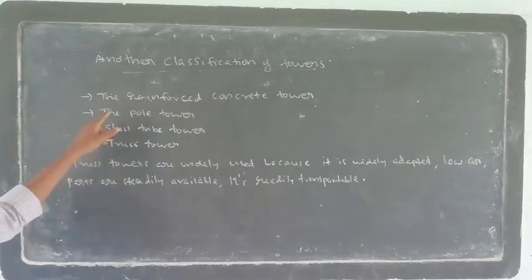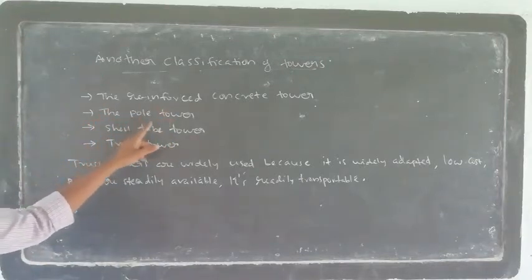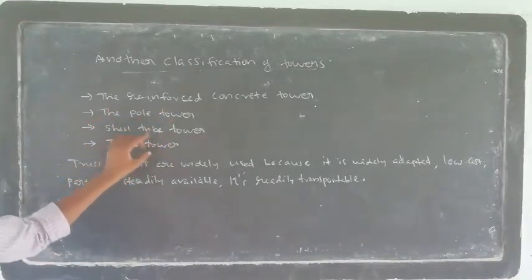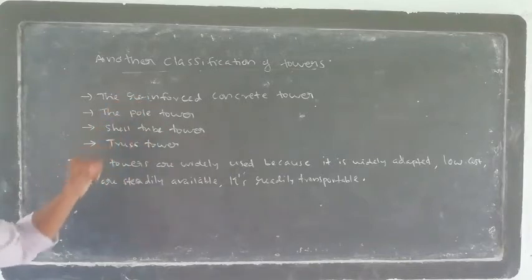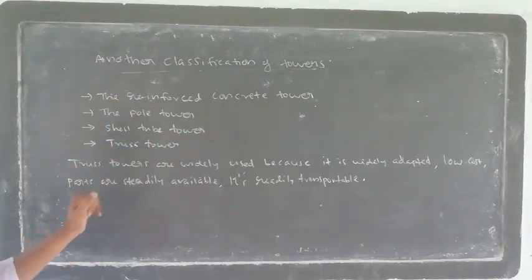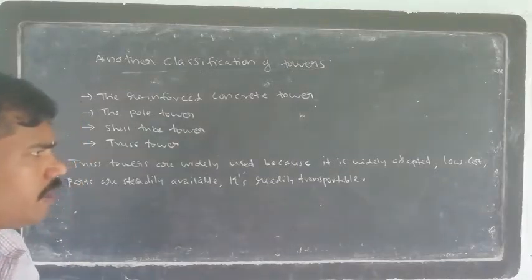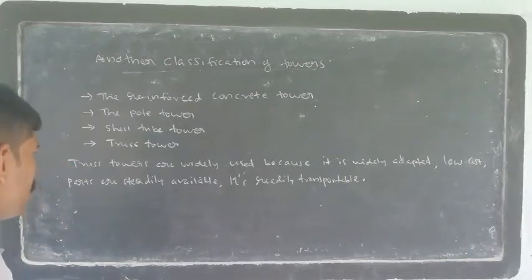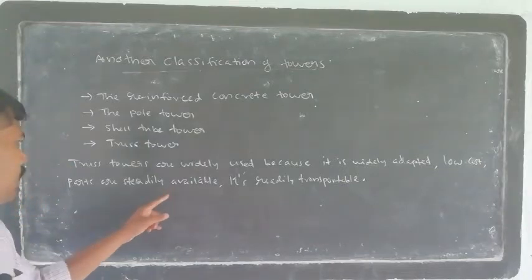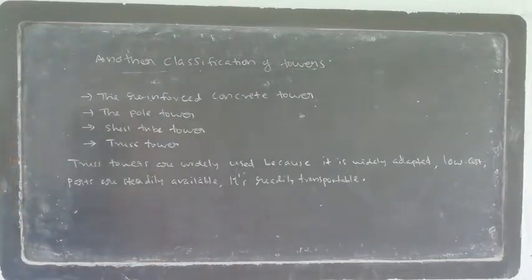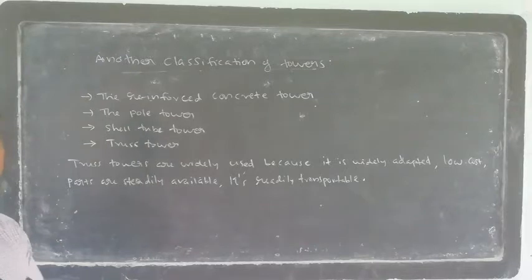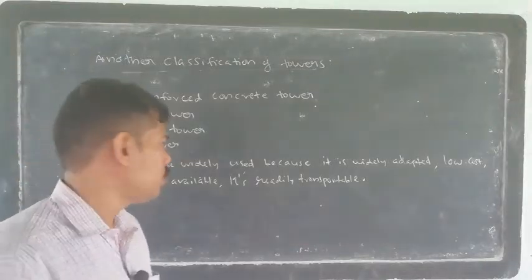Here, the reinforced concrete tower, the pole tower, shell tube tower, and truss tower — we classified these four items. Truss towers are not as visible but are widely adapted. They are low cost and parts are readily available and transportable.